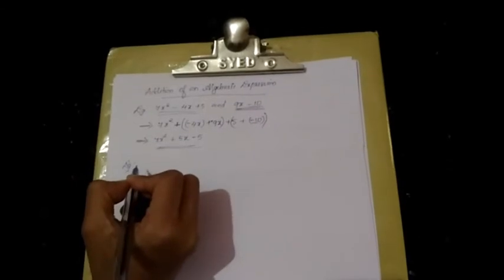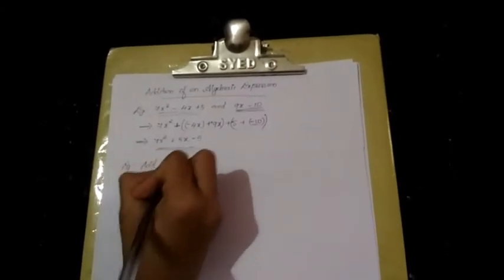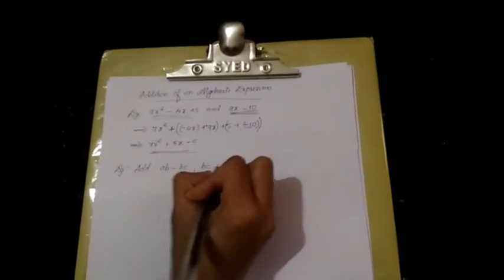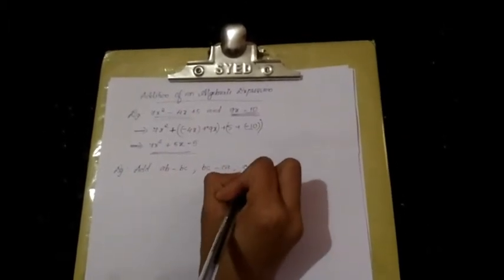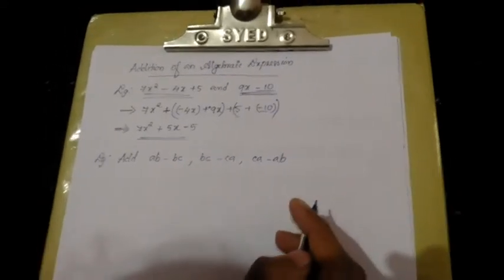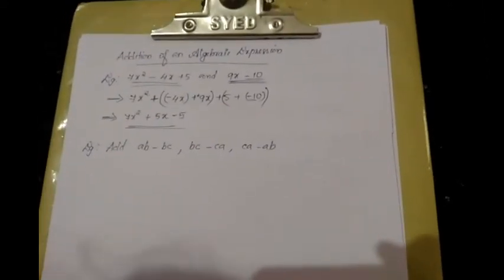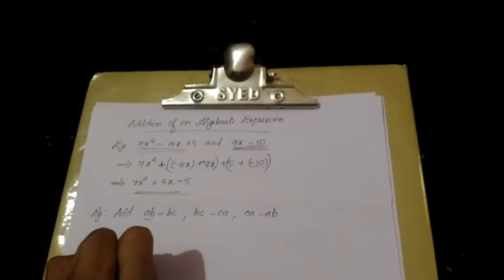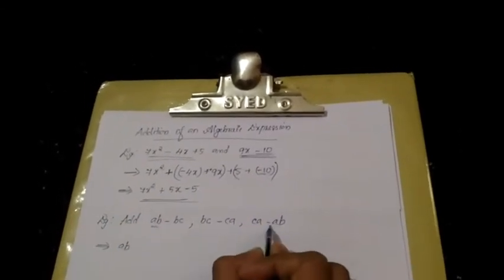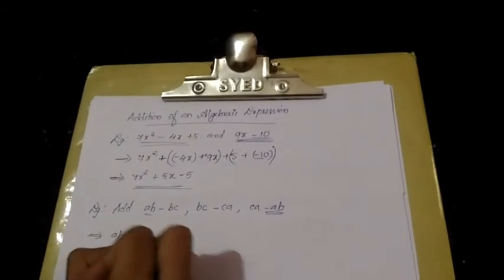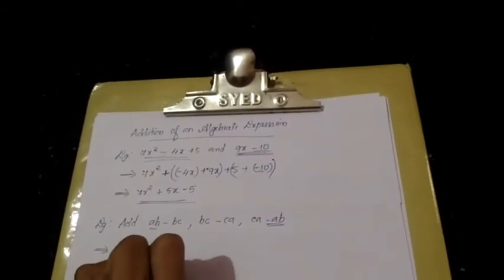Let's take another example. Add AB minus BC, BC minus CA, and CA minus AB.